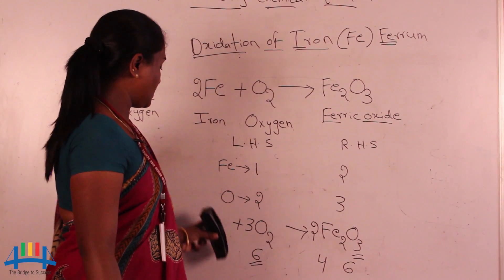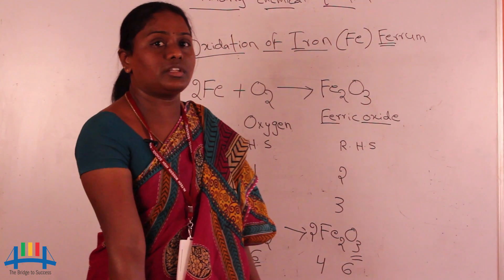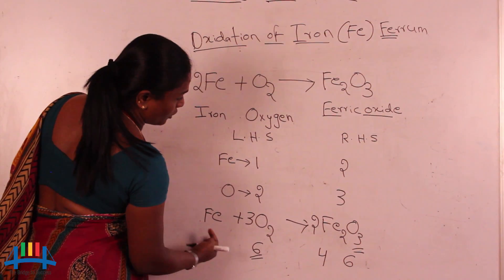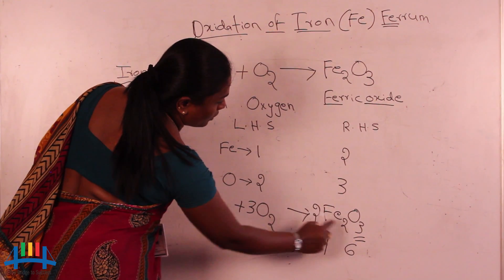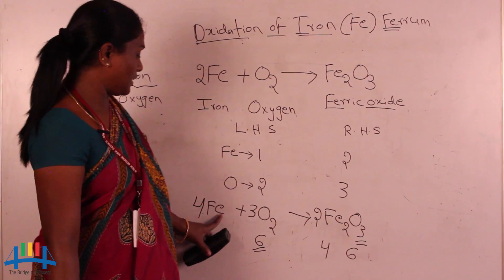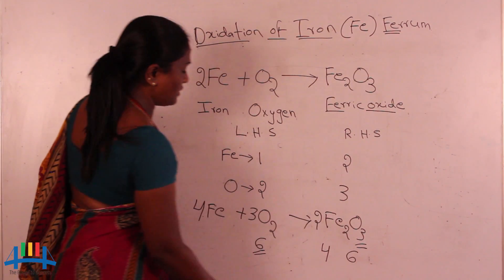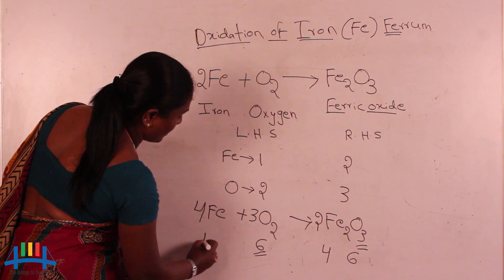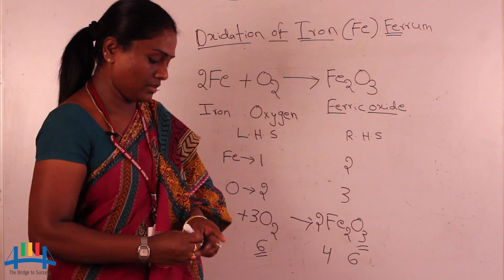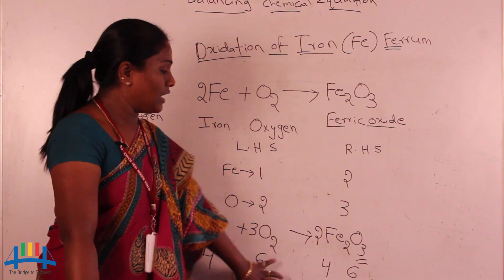Iron is now less on the left side again after adjusting oxygen. So I add more iron to the left: now write 4Fe directly, since 2×Fe2O3 gives 4 iron on the right. Check: 4Fe + 3O2 → 2Fe2O3. Iron: 4=4, oxygen: 6=6. The equation is balanced — four six equals four six on both sides.